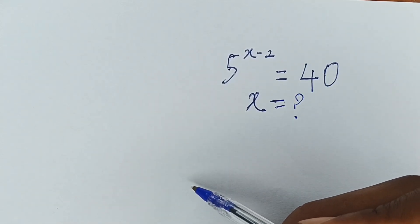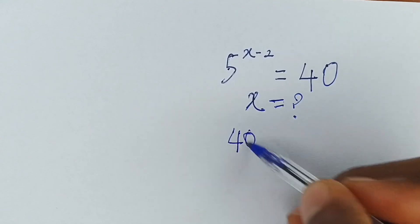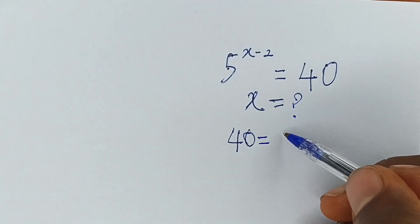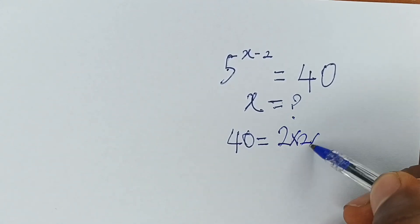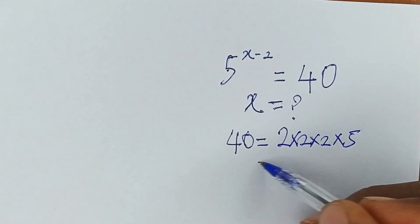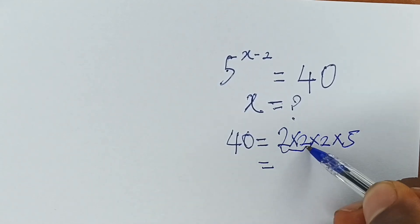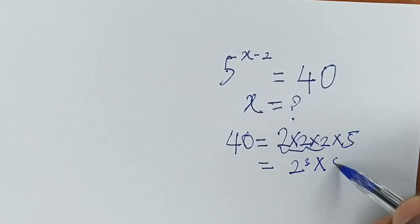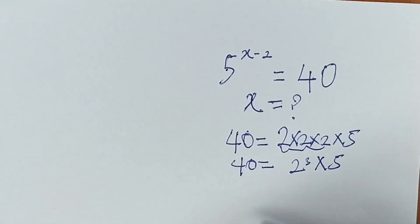The first thing we can say is that we can express 40 to be equal to 2 times 2 times 2 times 5. So 2 times 2 times 2 is 2 raised to the power 3, times 5, and this is 40.